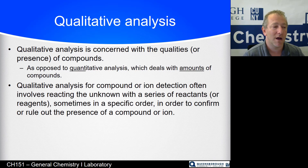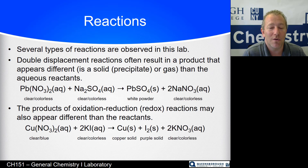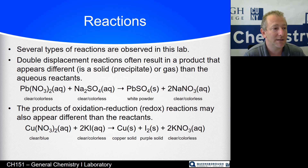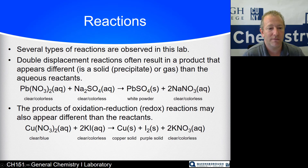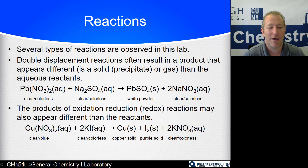There are a variety of different reactions observed in the lab. The first is a double displacement or double replacement reaction — pretty much a do-si-do with your partner if you've ever done square dancing. Lead and nitrate are two components of one ionic compound; sodium and sulfate are two components of the other. They swap partners: lead goes with sulfate, sodium goes with nitrate.